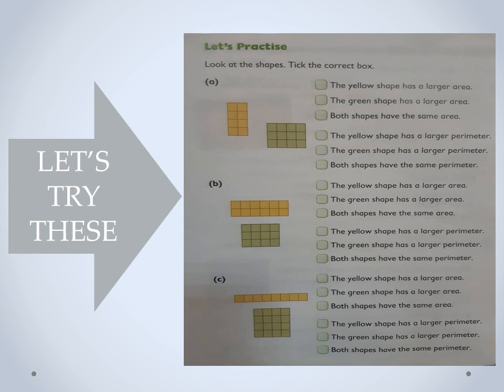Now, what about the green one? In the length we have one, two, three, four — that is four centimeters. And our width is one, two, three — our width is three centimeters. Now the question says tick the correct box: the yellow shape has a larger area — is that true?